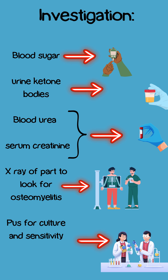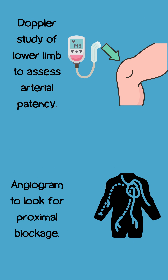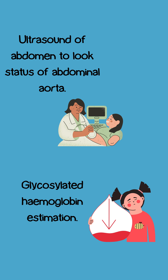Investigations include: blood sugar and urine ketone bodies; blood urea and serum creatinine; X-ray of the part to look for osteomyelitis; pus for culture and sensitivity; Doppler study of lower limb to assess arterial patency; angiogram to look for proximal blockage; ultrasound of abdomen to assess the abdominal aorta; and glycosylated hemoglobin estimation.